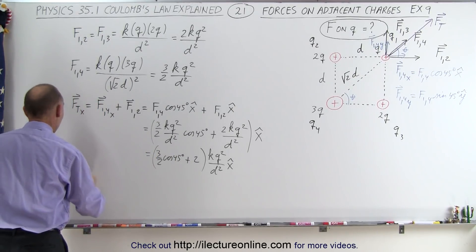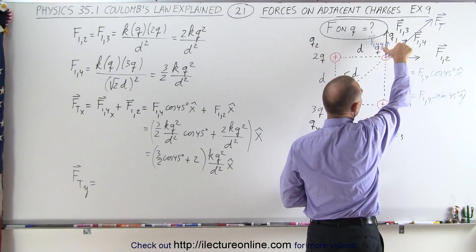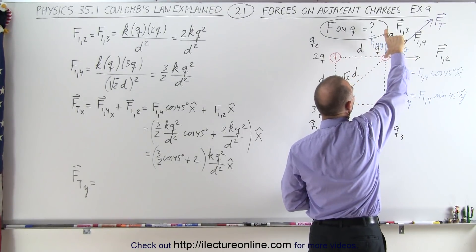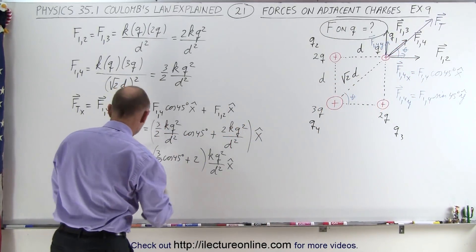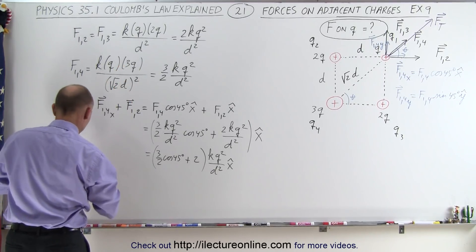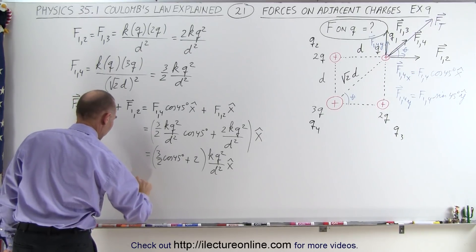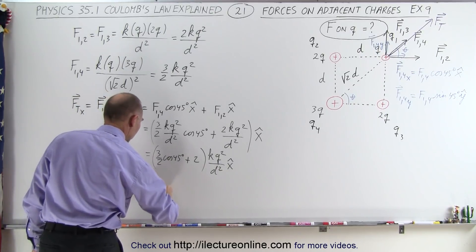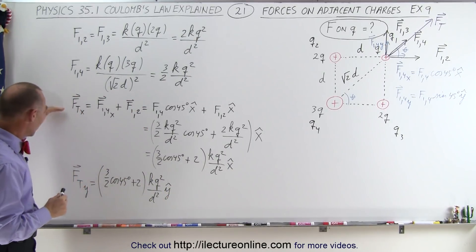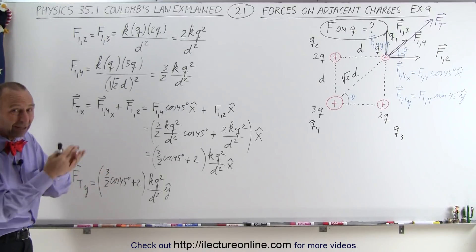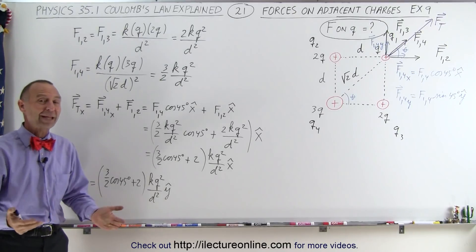For F_total in the y direction, notice the magnitude of the y-component of F1,4 equals the magnitude of its x-component, and F1,3 equals F1,2 in magnitude. So we get the exact same result in the y direction — it's positive since it points upward: [(3/2)·cos(45°) + 2] · kq²/d² in the positive y direction. Those are the two components of the total force, and that's how it's done.